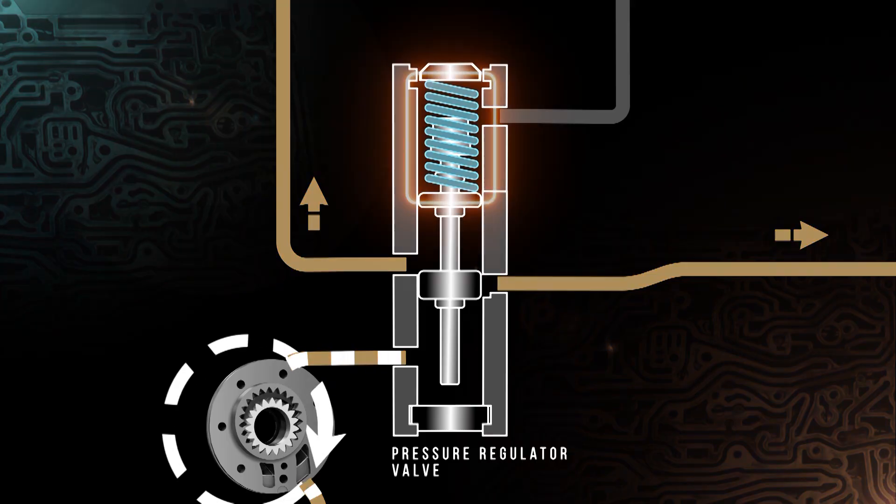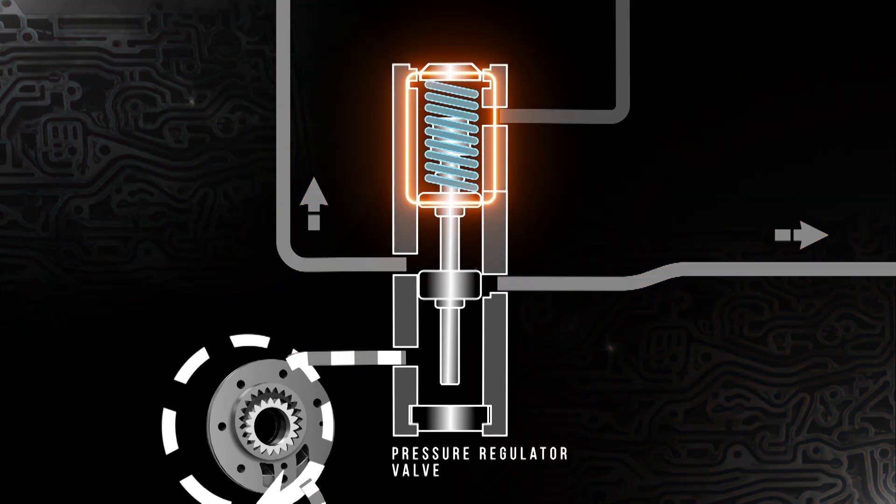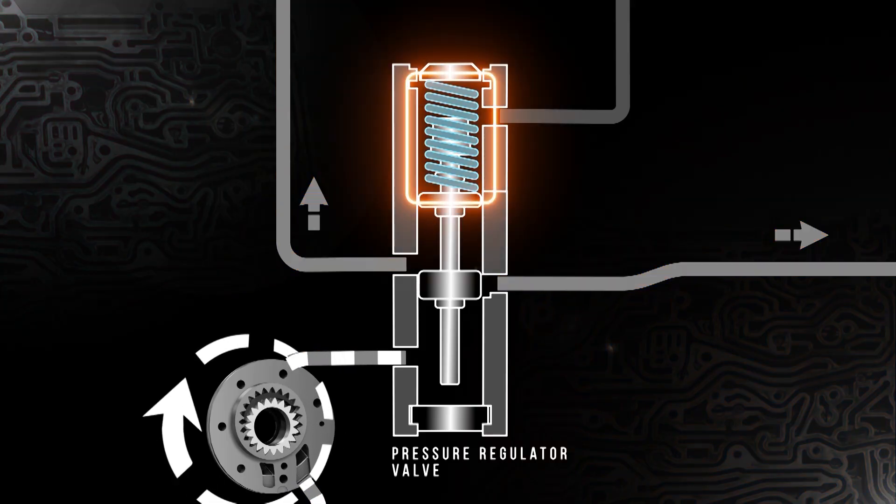The pressure regulator valve is used to control the pressure in the hydraulic system. As the engine speeds up, the transmission pump rotates faster, resulting in an increase of fluid volume, which can cause excess pressure. A spring on one side of the valve is used to control overall system pressure.